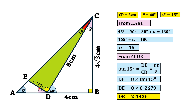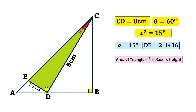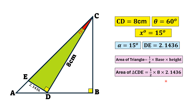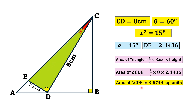Replacing this value, ED = 2.1436. Now we find the area of triangle CDE. Area = ½ × base × height, where base is 8 and height is 2.1436. After simplifying, the area of the green shaded region CDE equals approximately 8.5744 square units. That is the answer.